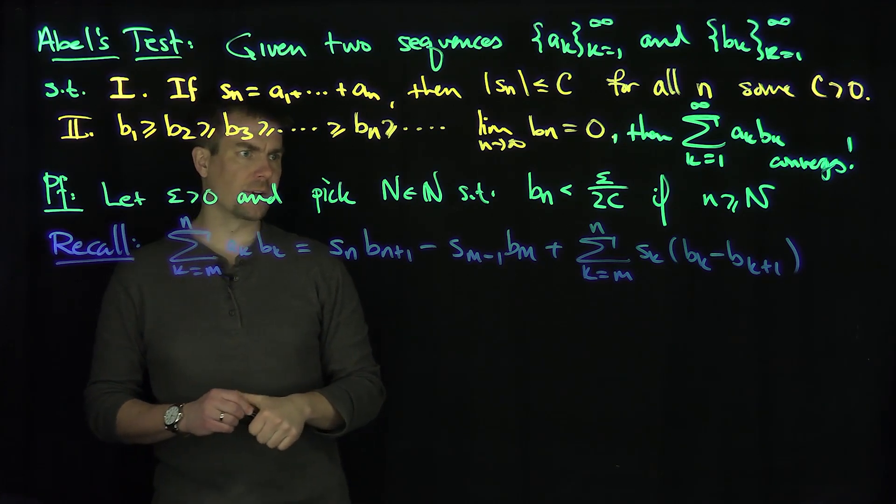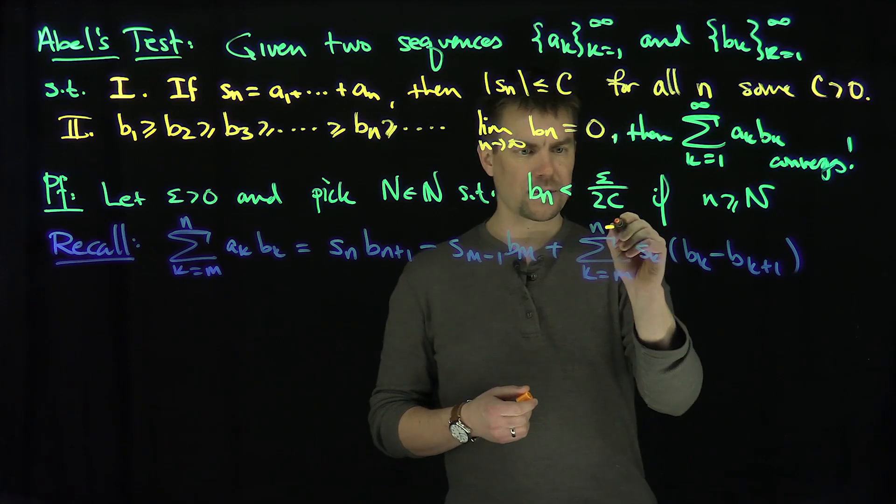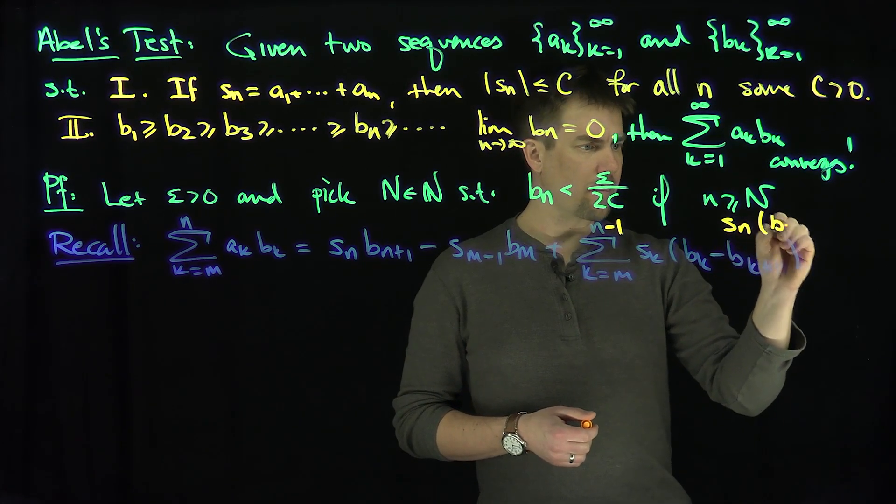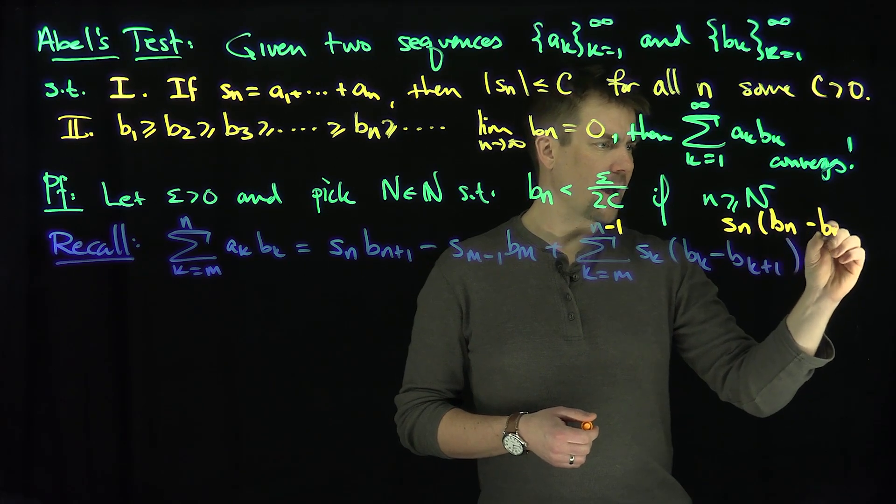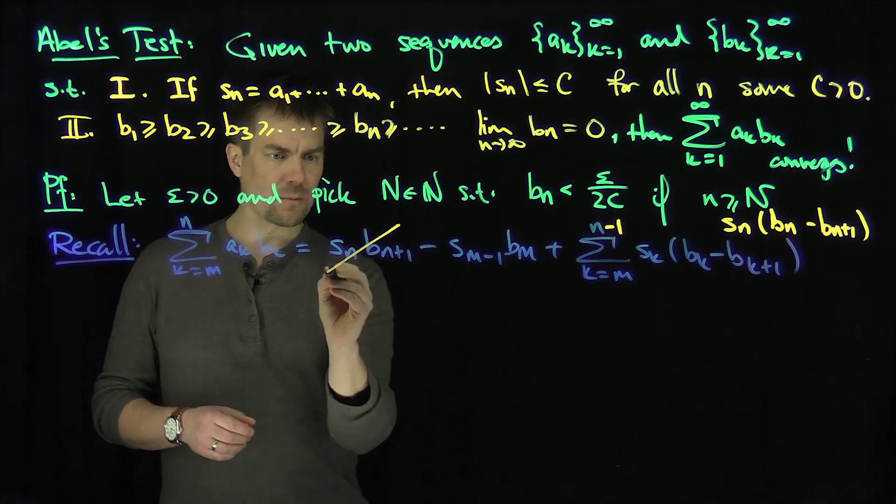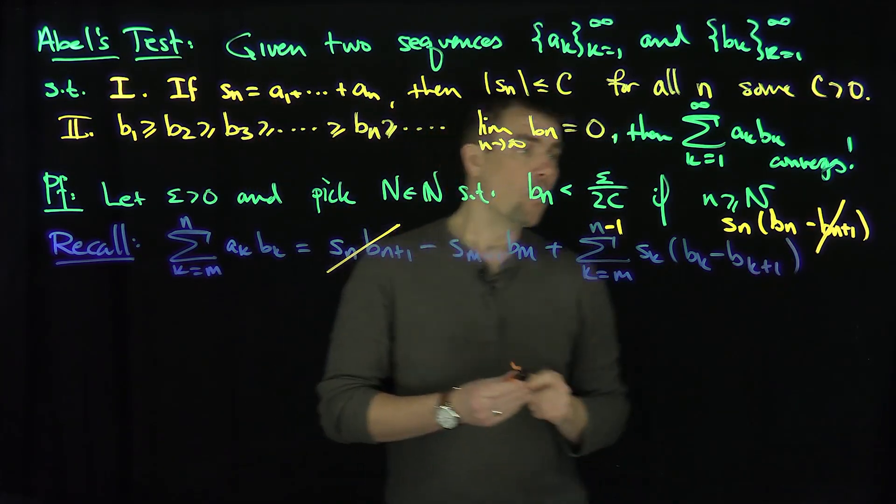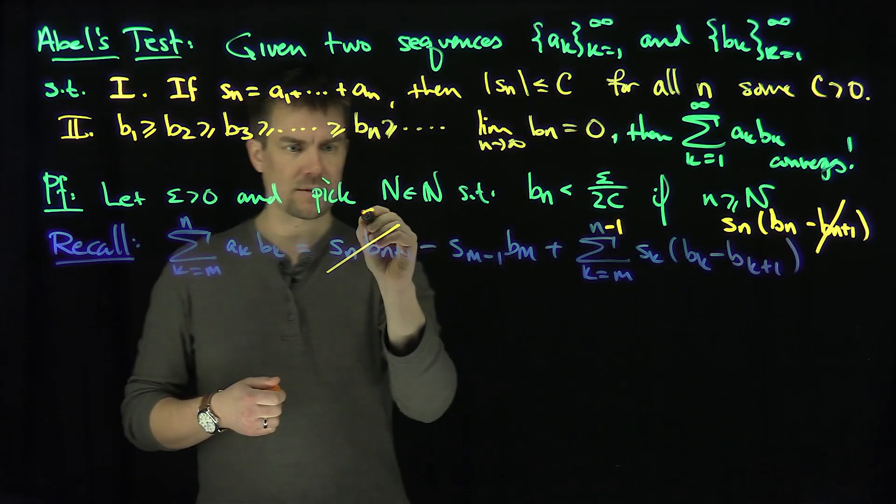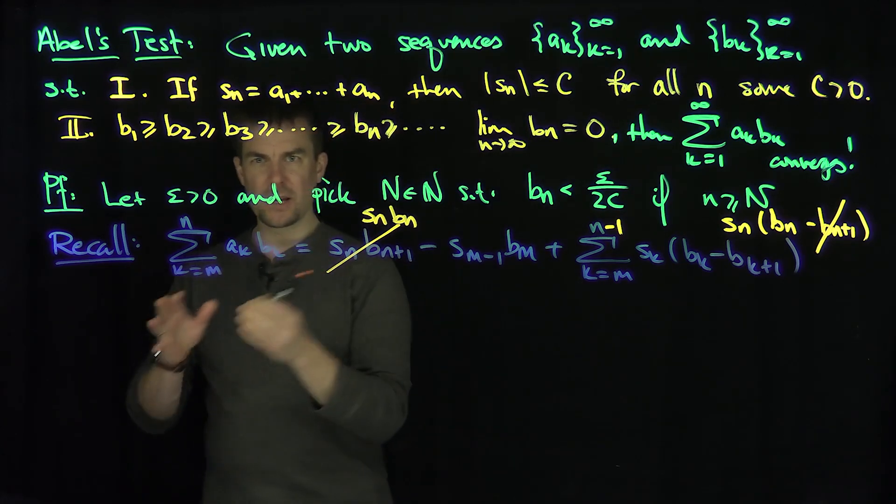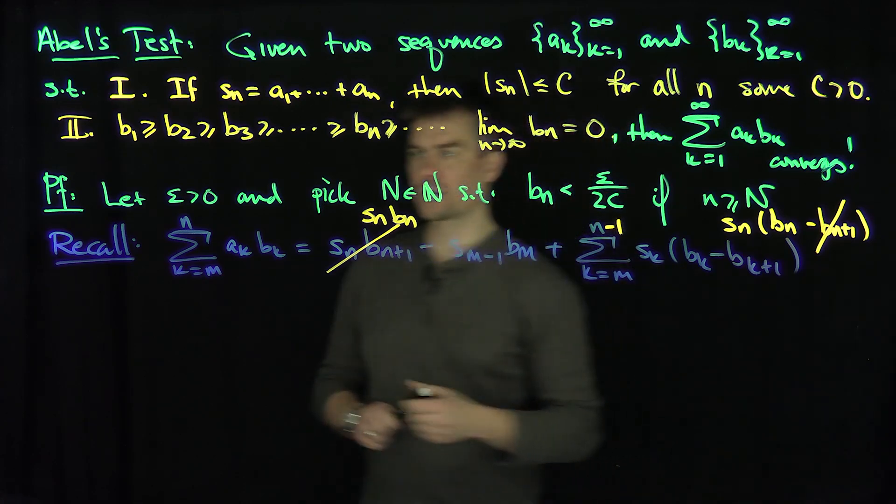So I'm going to do a slight variant of this version of summation by parts. What I'm going to do is pluck off this last term, and the effect is it's going to take this term and cancel with that term. Then we'll have s_n b_n over here, and then this index goes down to n-1, and that helps me organize my terms more efficiently for the remainder of the proof.